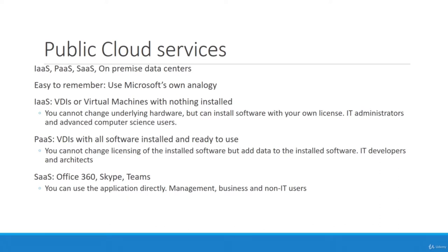Software as a Service means software in the cloud — think Office 365, where you open a web browser and access online Office. Gmail is an example of SaaS, Skype is an example of SaaS, and Microsoft Teams is a SaaS because it's a service available anywhere in the world — that's the cloud, available publicly to subscribers.